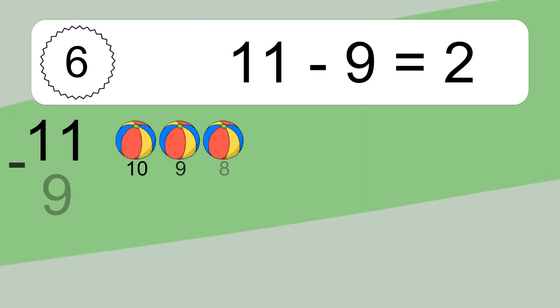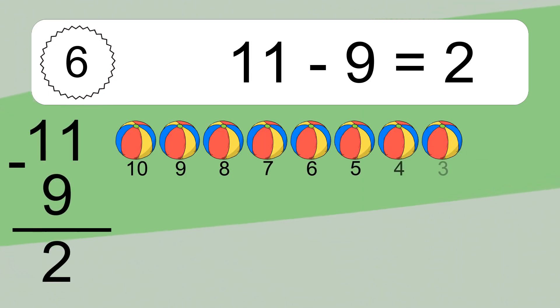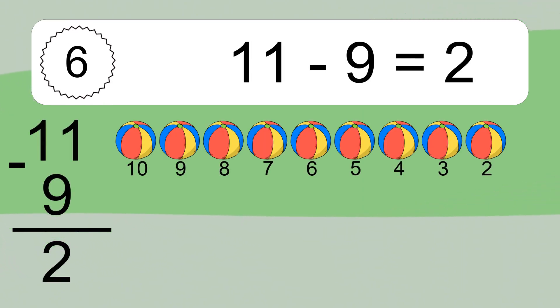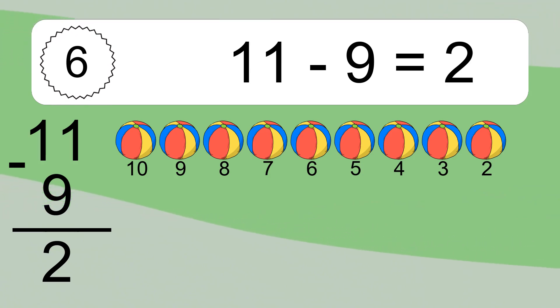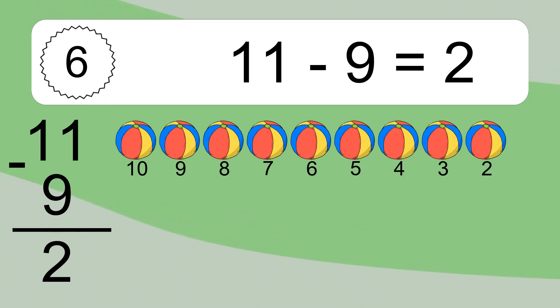11 minus 9 equals 2. Let's count it: 10, 9, 8, 7, 6, 5, 4, 3, 2.